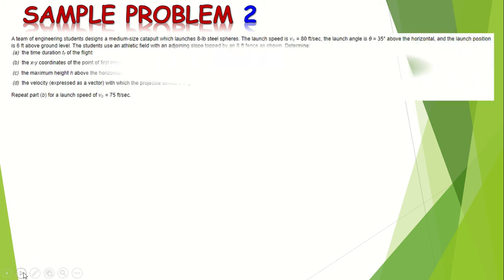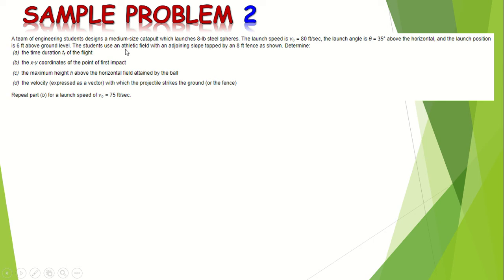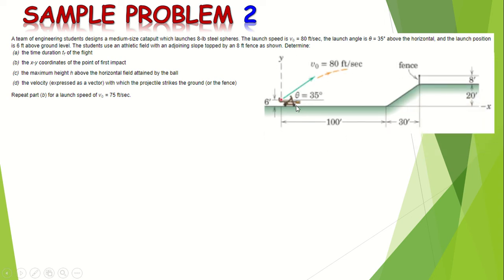Here's the second problem: a team of engineering students designed a medium-size catapult which launches eight-pound steel spheres. The launch speed is 80 feet per second — that is the initial velocity v-sub-zero. The launch angle is theta equal to 35 degrees above the horizontal, and the launch position is six feet above the ground. The students use an athletic field with an adjoining slope topped by an eight-foot fence, as shown in the illustration.